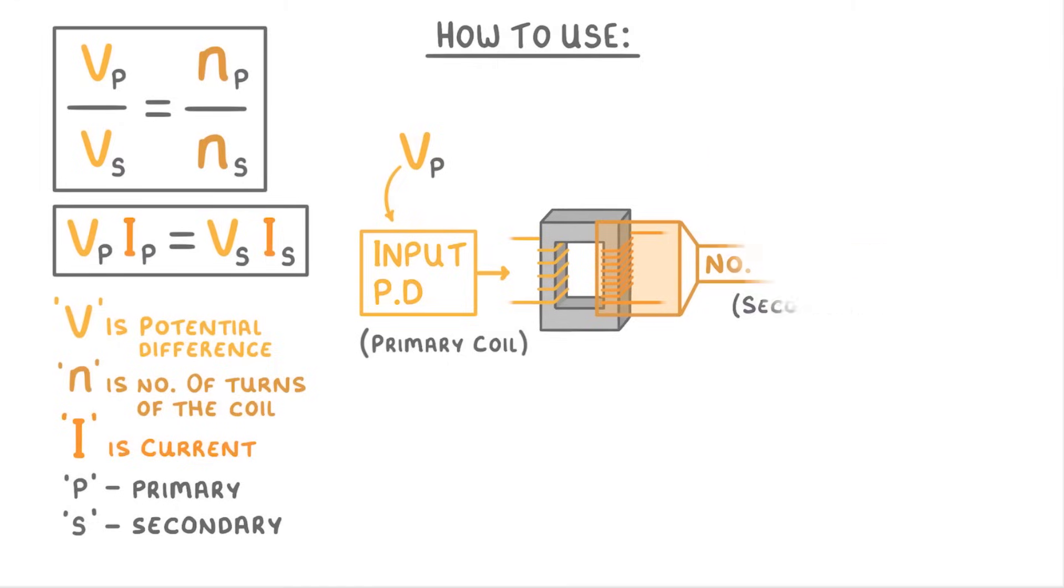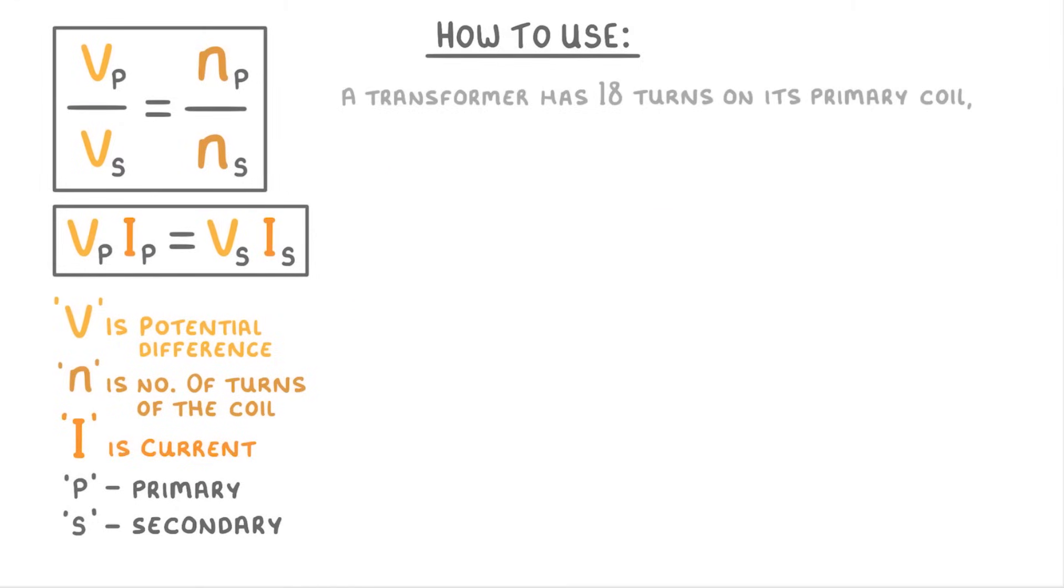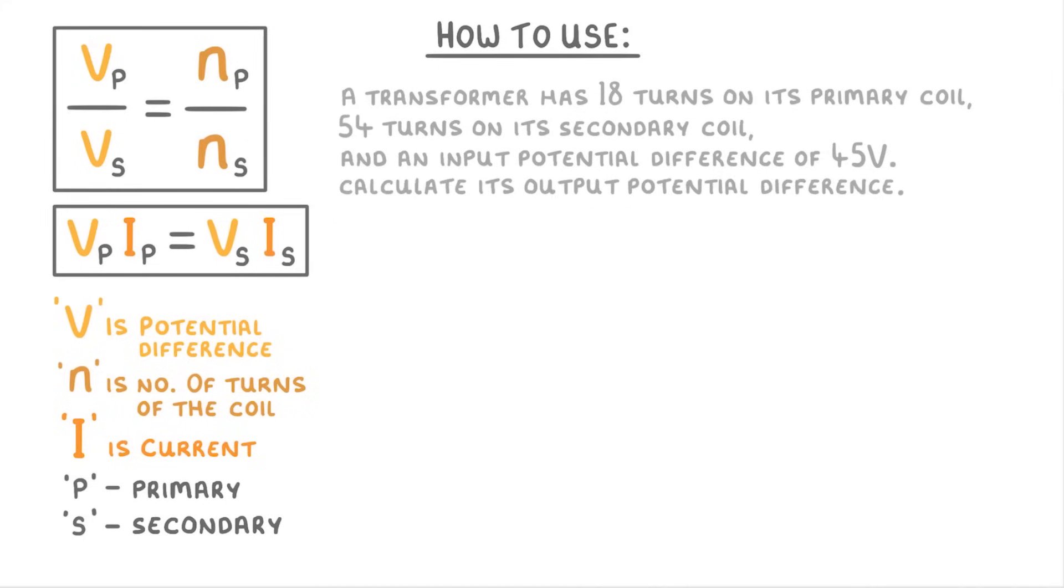To see how they work, let's try a few questions. A transformer has 18 turns on its primary coil, 54 turns on its secondary coil, and an input potential difference of 45 volts. Calculate its output potential difference. With these questions, it's best to make a list of what you know and what you're trying to find out.